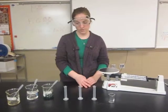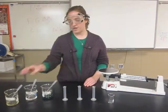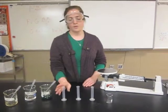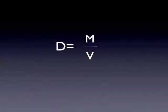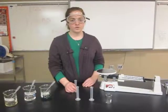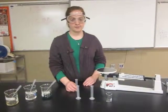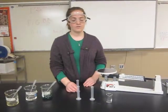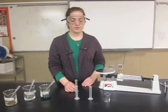The next thing you want to do is find the density for each substance. We're going to start with oil. Remember, the formula for density is mass over volume, so you need to find the mass of the substance. We're going to use 10 milliliters of each liquid, so you can fill in 10 milliliters for each liquid into your chart.